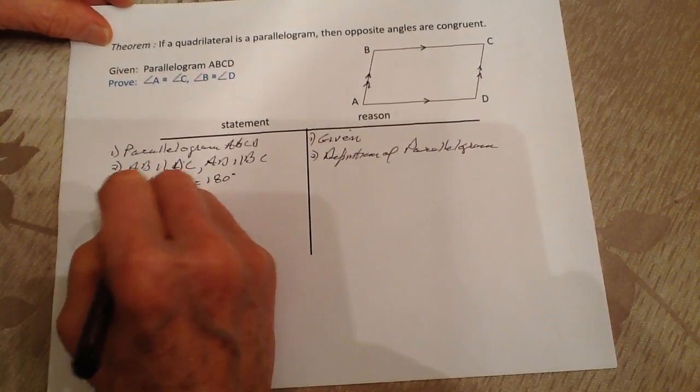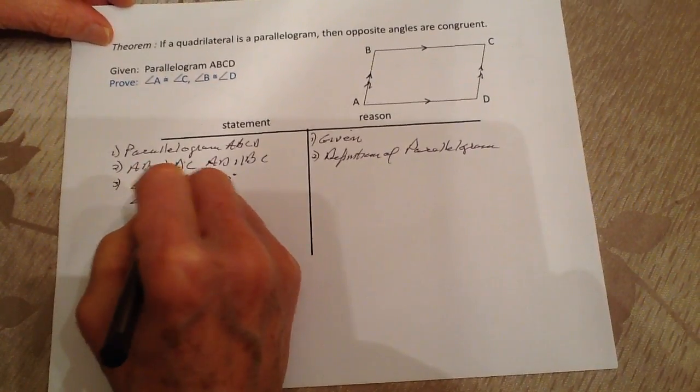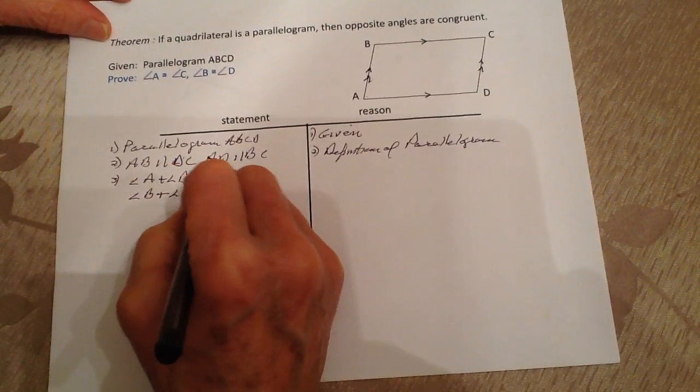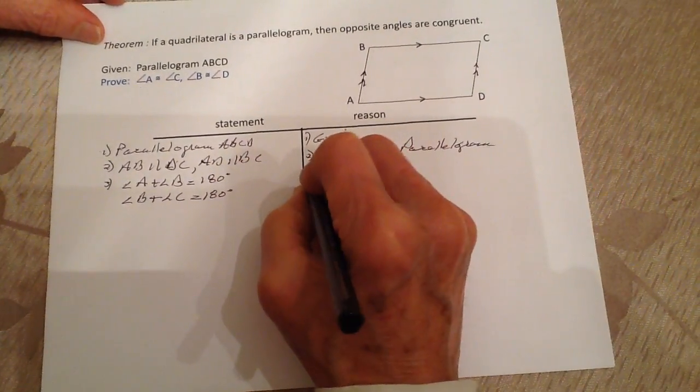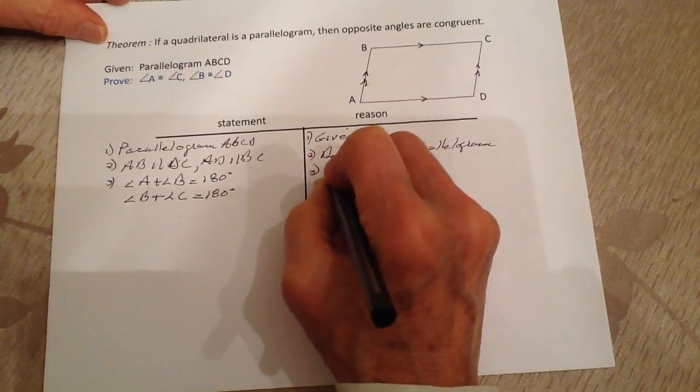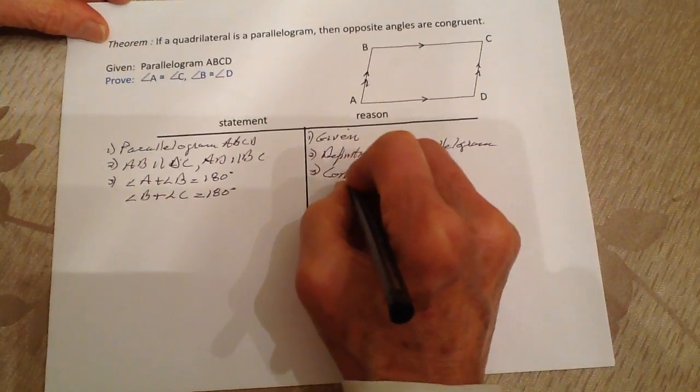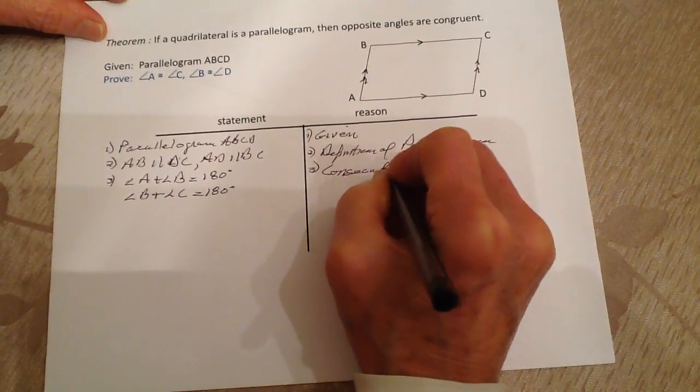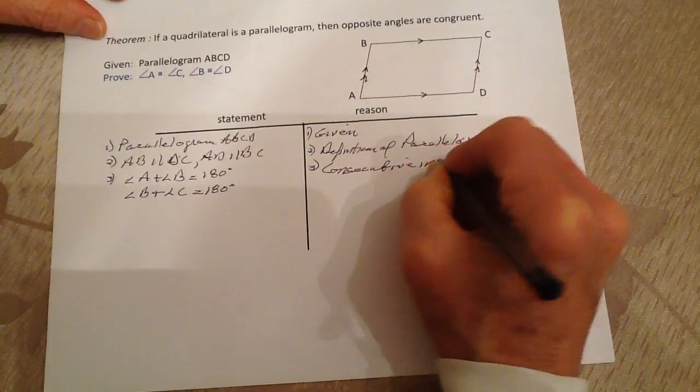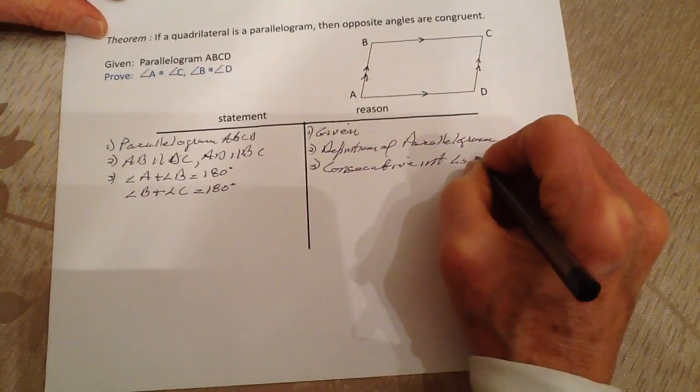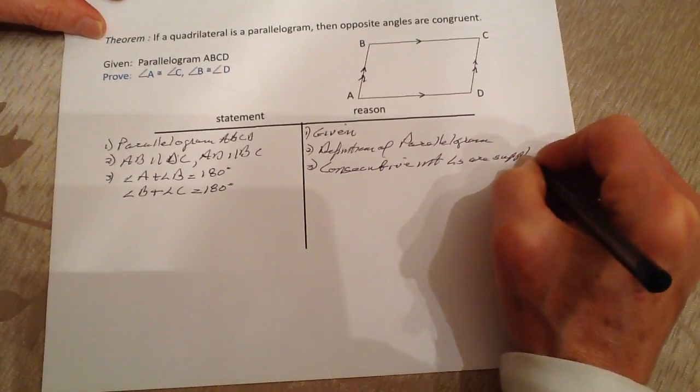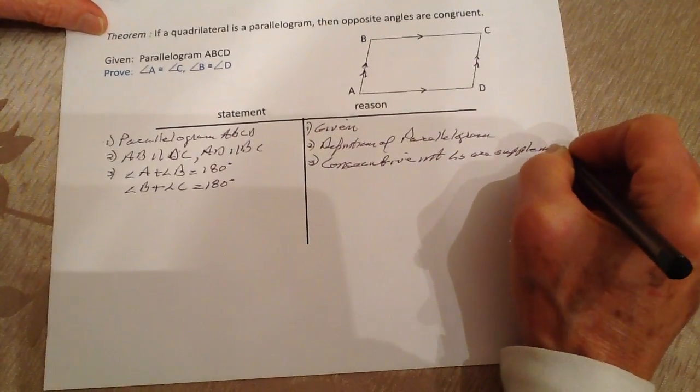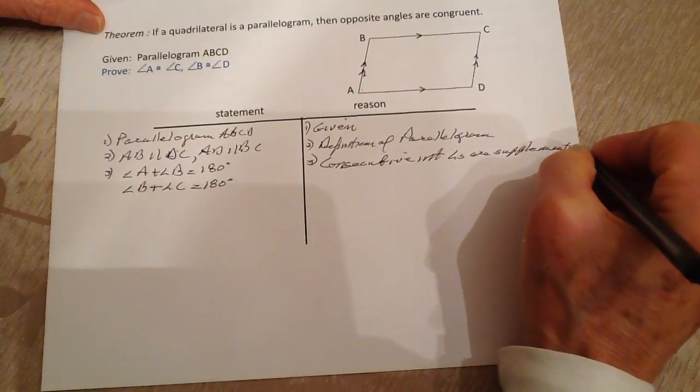And we know that for statement three, these are consecutive interior angles which are supplementary. And we know that supplementary means they're equal to 180 degrees.